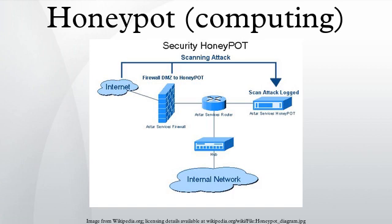Based on design criteria, honeypots can be classified as pure honeypots, high-interaction honeypots, or low-interaction honeypots. Pure honeypots are full-fledged production systems. The activities of the attacker are monitored by using a casual tap installed on the honeypot's link to the network, and no other software needs to be installed. High-interaction honeypots imitate the activities of production systems that host a variety of services, so an attacker may be allowed many services to waste his time. By employing virtual machines, multiple honeypots can be hosted on a single physical machine, so even if the honeypot is compromised, it can be restored more quickly.